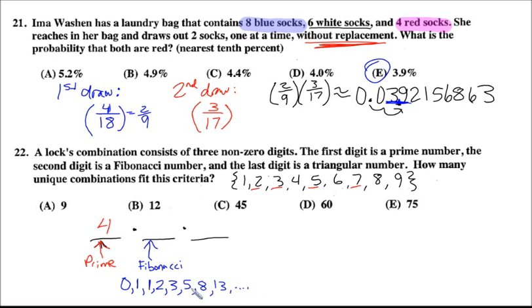I stopped there because thirteen is now outside of this range of our universe. All the possible Fibonacci numbers in this set are one, two, three, five, and eight. That's one, two, three, four, five different choices.